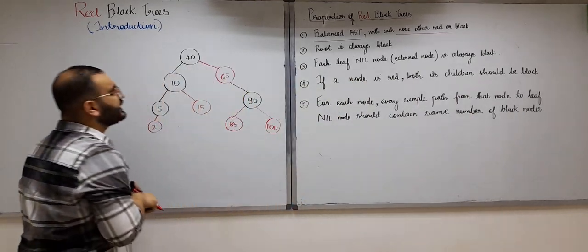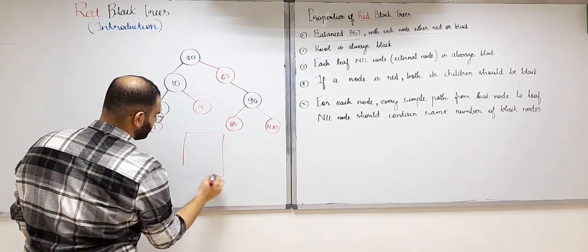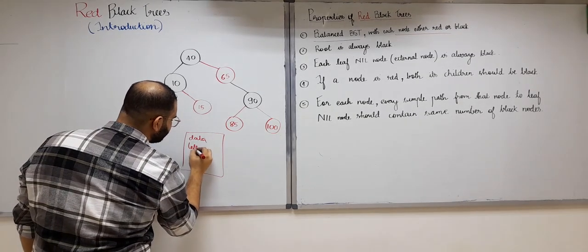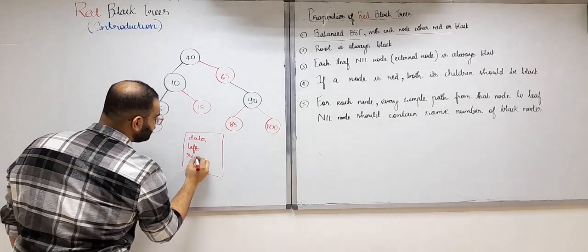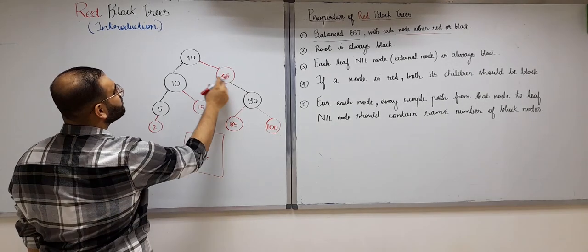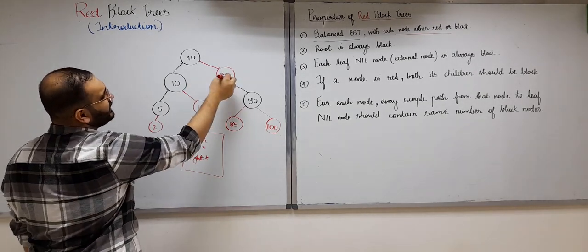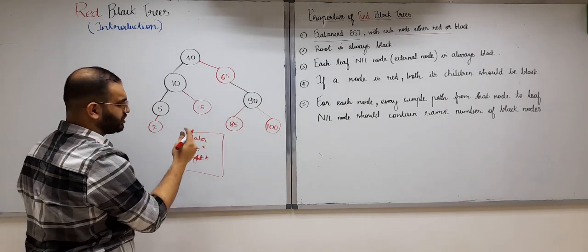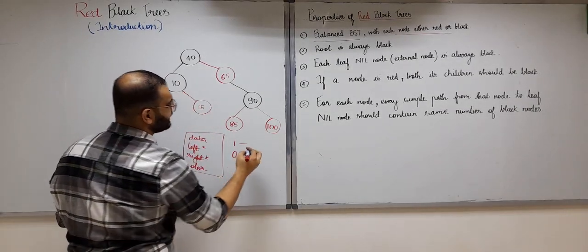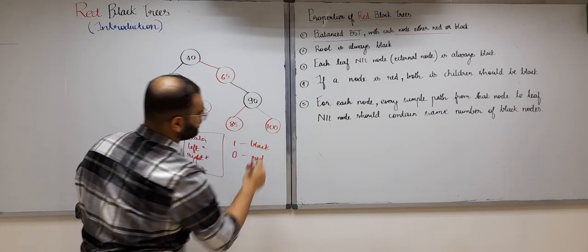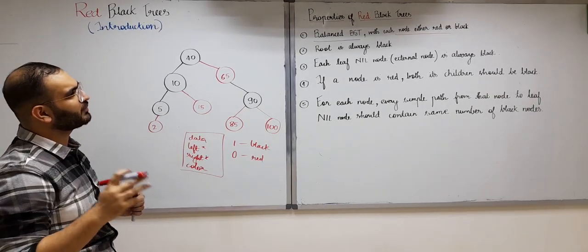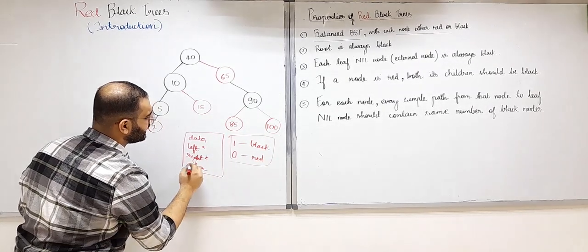The first property also says that each node is either red or black. The structure of a red-black tree node has a data field, a left pointer, a right pointer, and additionally a color field. This color can be stored as one extra bit — for example, one can represent black and zero can represent red or vice versa. This is the only difference in structure compared to a normal binary search tree node.